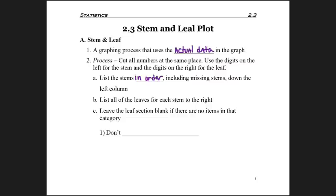But here you do leave a blank if an item is missing. The stems you don't, the leaves you do. So don't write a zero to fill in a blank spot.